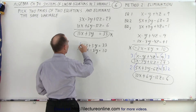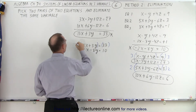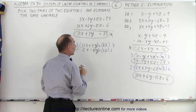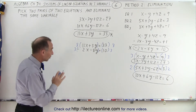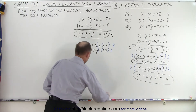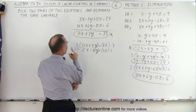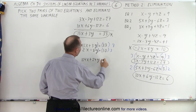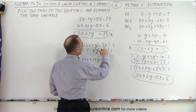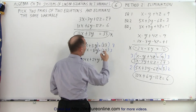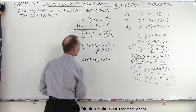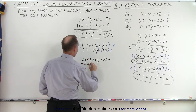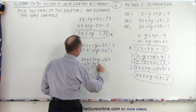We're going to multiply the first equation, both sides, by 8, and the second equation, both sides, by 3. When we multiply both sides of an equation by the same number, nothing changes. So 8 times 13 is 104x, plus 24y is equal to 264. And here we get minus 6x minus 24y is equal to 30.